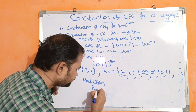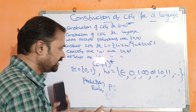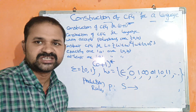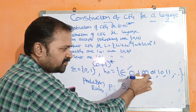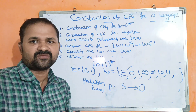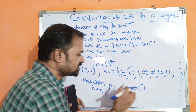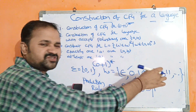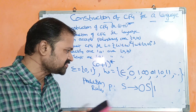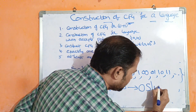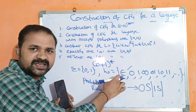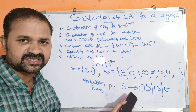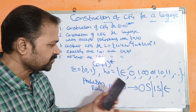Production rules are denoted by P. Let the starting symbol be S. S implies 0S — the minimum string starting with 0 can be followed by 0 or 1 or any combination, so we recursively call the starting symbol. Similarly, S implies 1S. The minimum possible string is epsilon, so for termination we use epsilon. Totally we have three productions: S implies 0S, or 1S, or epsilon.